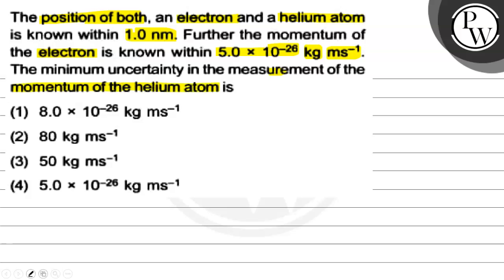We have four options given and we have to identify the correct option and solve. So what concept should we use? That is the Uncertainty Principle. This was given by Heisenberg.